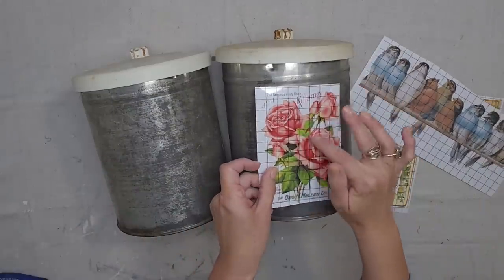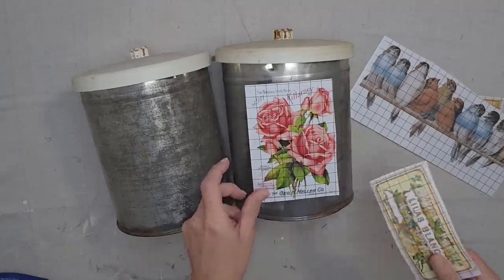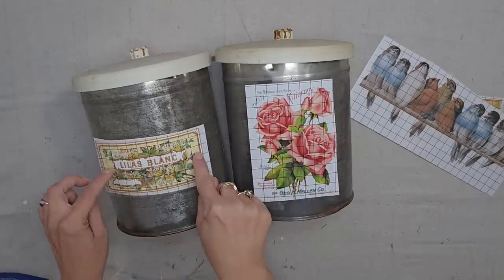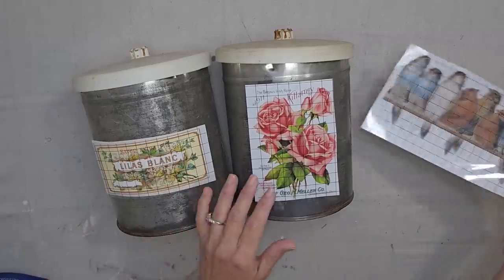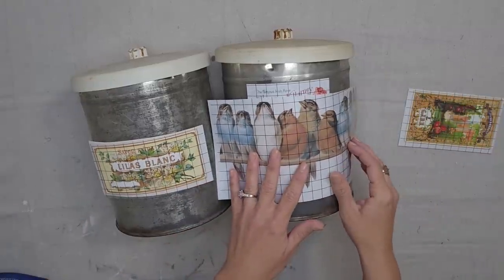I think the pink looks really good with the silver, but so does the yellow. I really like the size of this one on the canister set, so I think I'm going to go with this and I think I'm going to go with the birds.